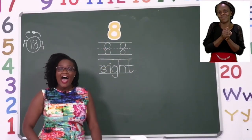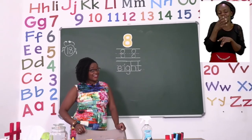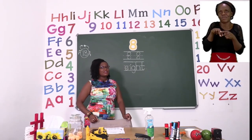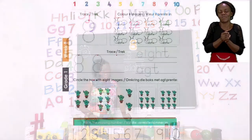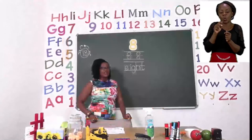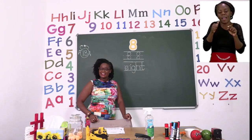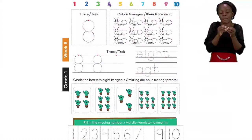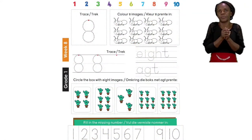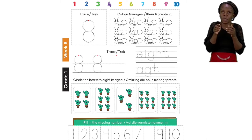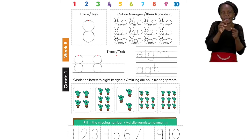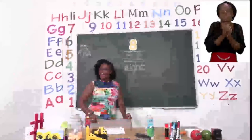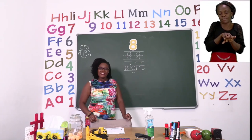That animal has eight legs, and just like your exercise you are going to practice not just drawing the number eight but identifying things or images with the number eight. You're going to start at the top where you color eight items, then circle the image that has eight plants, then write the number eight for the missing number line, and also trace the numbers so they can be complete. Take your time, have fun, and I'll see you just now.